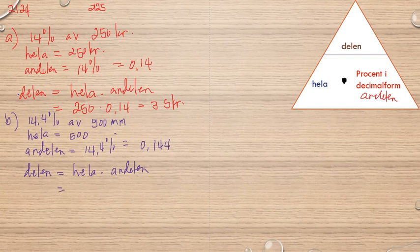Multiply with andelen (the proportion). Hela is 500 millimeters, I'll write that directly there. Andelen is 0.144. So I get 500 multiplied by 0.144, which is 72 millimeters.